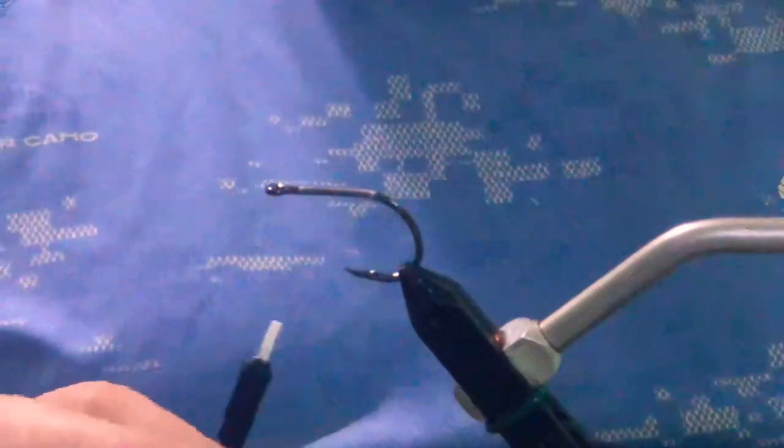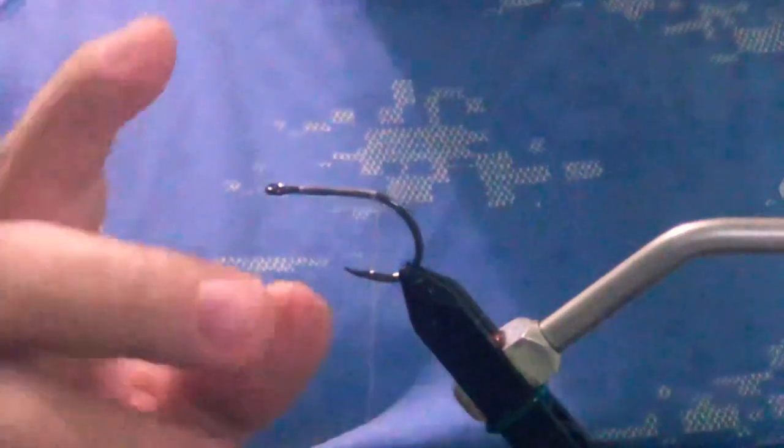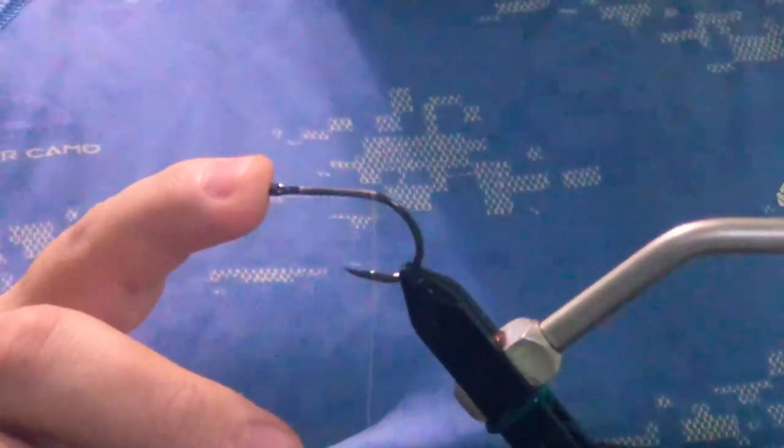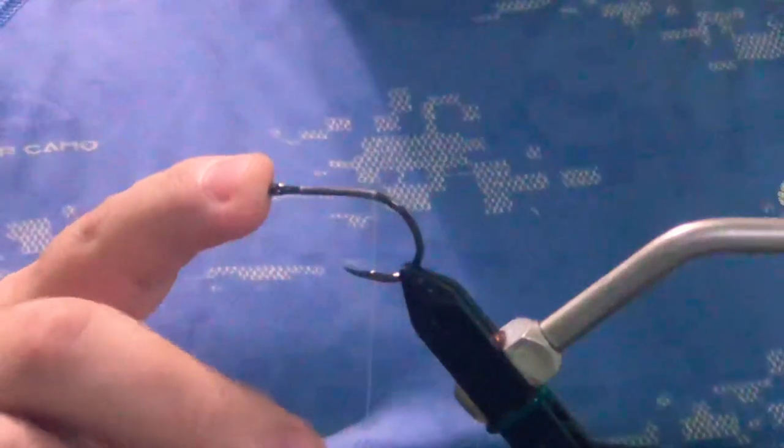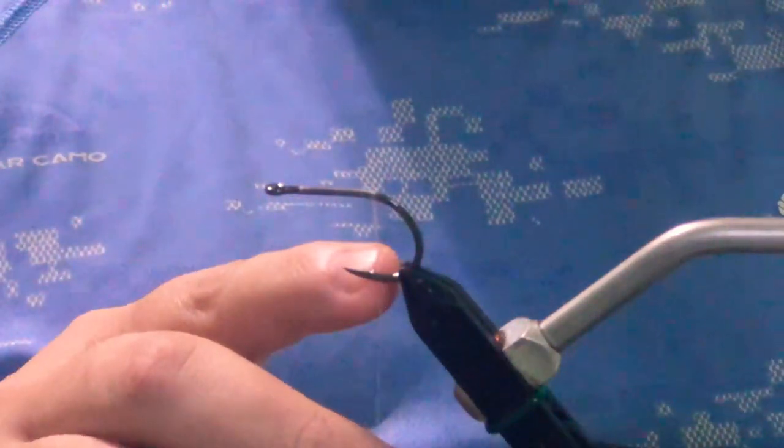First thing we want to do is get our thread started on this Gamakatsu SL-12S short, and we're just going to bring the thread all the way back to where the barb of the hook is.